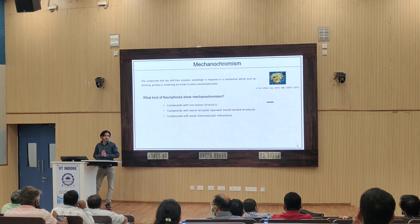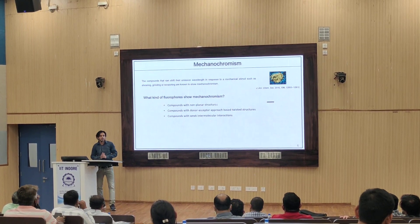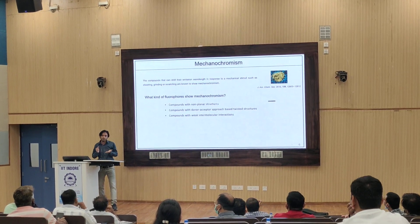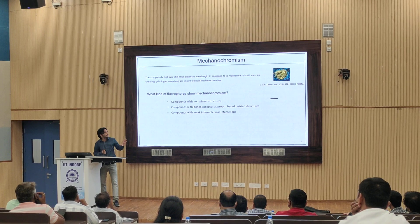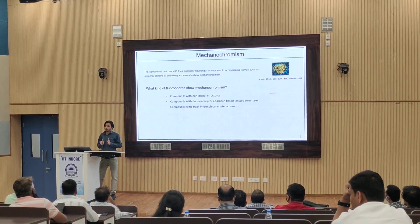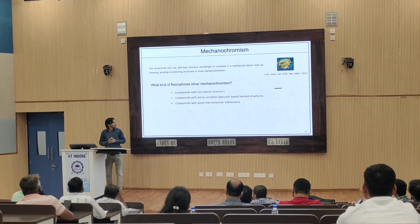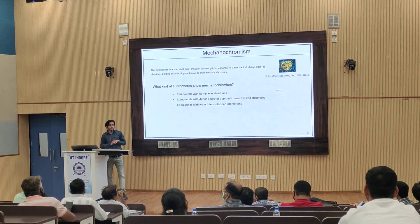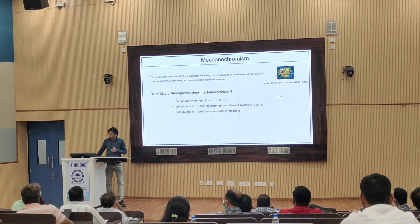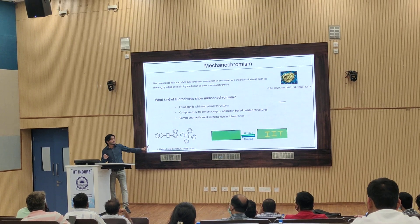Several fluorophores can change their emission color when subjected to mechanical stimuli — this phenomenon is called mechanochromism. For example, a gold complex originally blue in color changes to yellow when ground in a pestle with water. Compounds that show mechanochromism include those with twisted molecular structures, those based on a donor-acceptor approach where the donor and acceptor moieties are non-coplanar, and compounds with weak intermolecular interactions. Our group reported a phenanthrimidazole derivative in 2018 that was mechanochromically active.